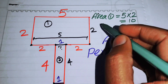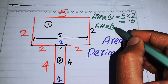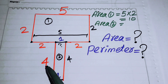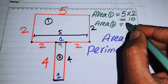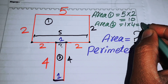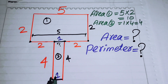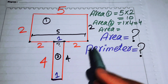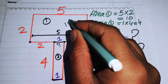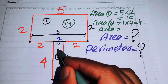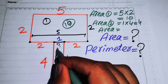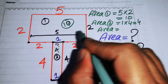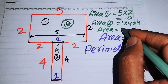The area of Rectangle 2 has length 1 and breadth 4, so its area is 1 × 4 = 4. To find the total area, we add the two areas: 10 + 4 = 14. So the total area of this region is 14.